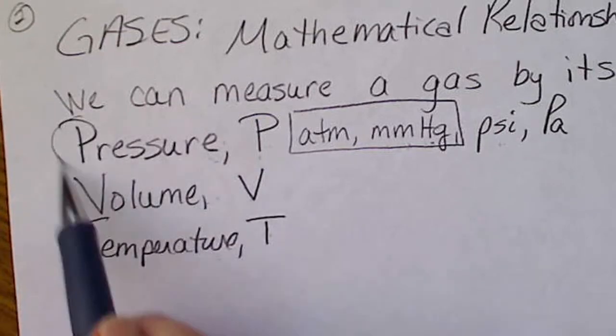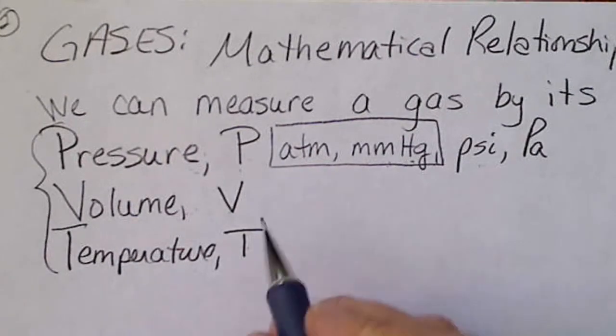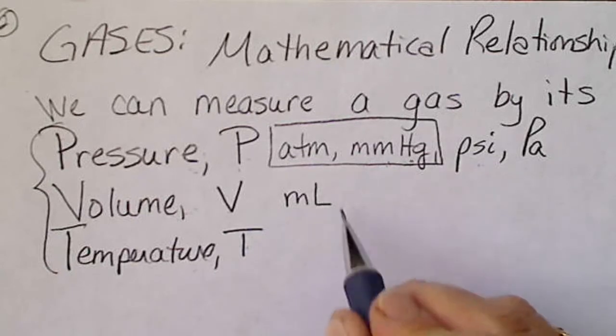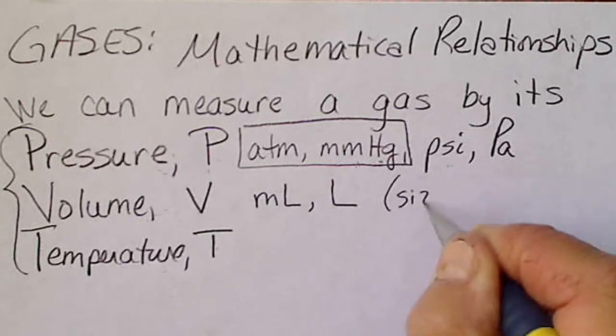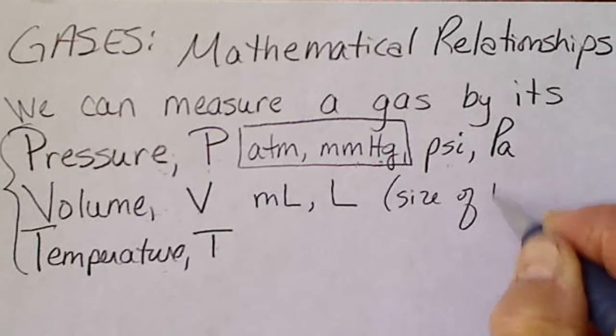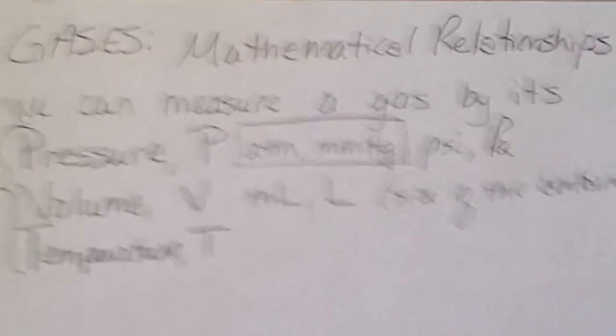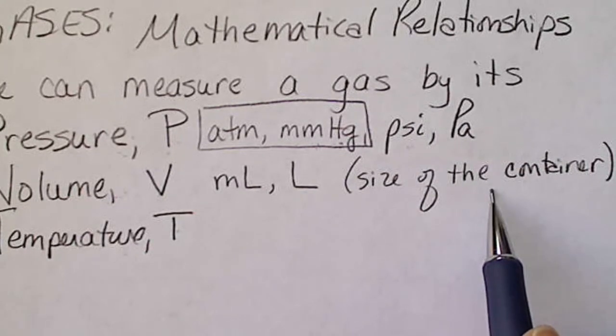So these three things are related mathematically and we're going to look at some of those relationships. For volume measurements, we might have so many milliliters of a gas or so many liters of a gas. So generally the volume of the gas is the size of its container. So we're going to talk about containers of gas and if we don't have a container that's storing the gas, then the gas is going to escape into the atmosphere. So we're going to be talking about gases that are in a balloon or they're in a cylinder.